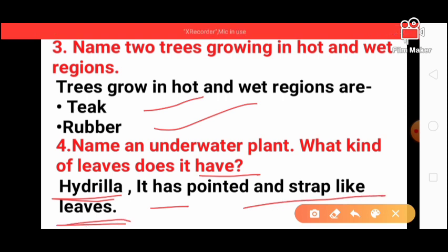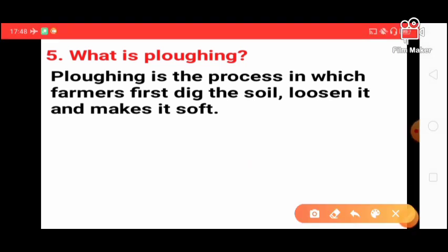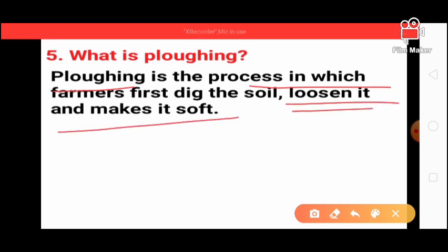Next, what is plowing? Plowing is the process in which farmers first dig the soil, loosen it, and make it soft. This process is called plowing.